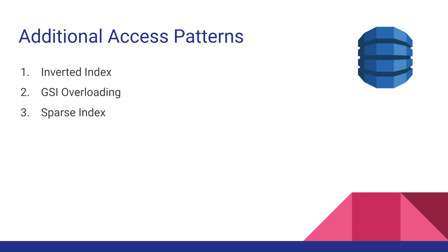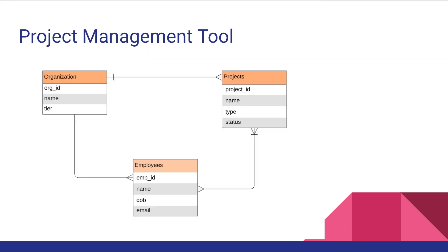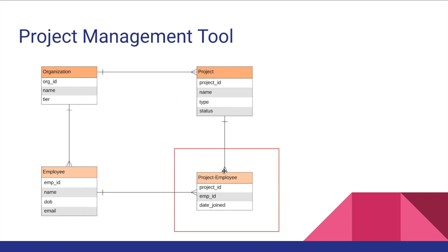One part of the many-to-many relationship can be queried by the table primary keys — the partition key and sort key. But when it comes to the other side of the many-to-many relationship, we can use an inverted index to query that. In this example it's a project management tool with projects and employees. One project can have multiple employees and one employee can be part of many projects. In a previous lesson I broke this many-to-many relationship into two one-to-many relationships using a third table called project employee.